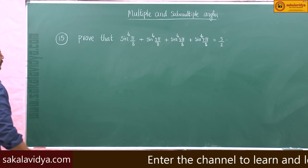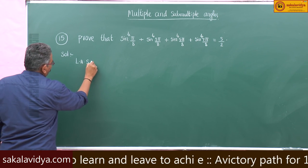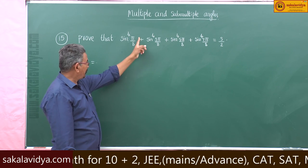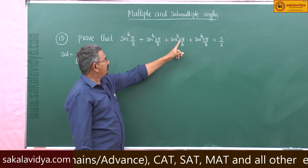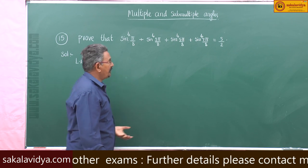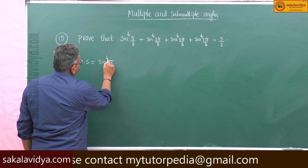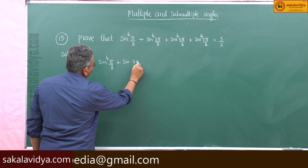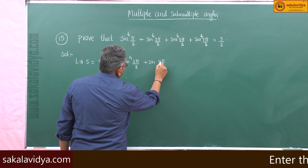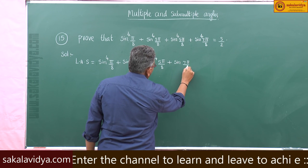Let us prove it. Now let us consider the left hand side. The left hand side is sin⁴(π/8) + sin⁴(3π/8) + sin⁴(5π/8) + sin⁴(7π/8). So let us note down the left hand side value.